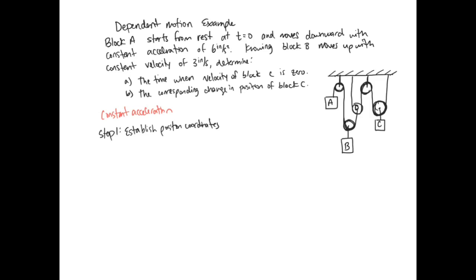We have to start from a datum. In this case, because all of the particles are moving up and down, we can set a datum across here. xC moves down from there, we have xD here, xB here, and xA here. They are all moving downwards as the positive direction, so downwards from this datum is our positive direction, and the origin for all particles is the datum.